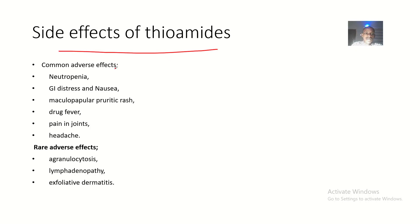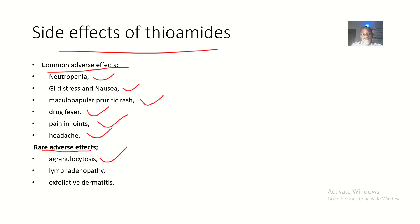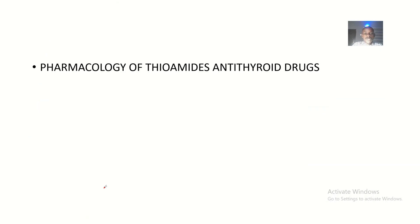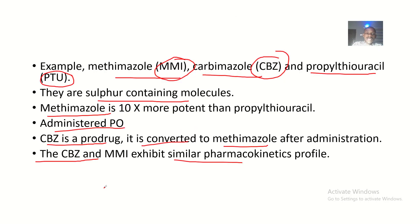Common adverse effects of thioamides include neutropenia, GI tract distress and nausea, maculopapular pruritic rash, drug fever, joint pains, and headache. Rare adverse effects include agranulocytosis, lymphadenopathy, and exfoliative dermatitis. This concludes the pharmacology of thioamides as antithyroid drugs — we discussed the types and the mode of action.